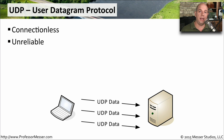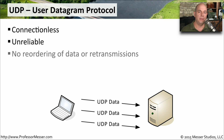Generally, the applications using UDP don't care if all of that information got to the other side — it's making a best effort to send that information out and doesn't worry about not receiving acknowledgments back. Because there are no acknowledgments or tracking in UDP, there's no way to reorder or retransmit information through the network. Applications using UDP aren't concerned with retransmissions. For example, there's no need to retransmit a Voice over IP communication in real time, so UDP makes a fine protocol for that particular purpose.